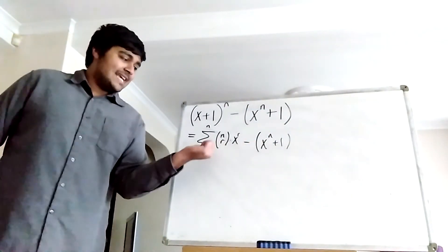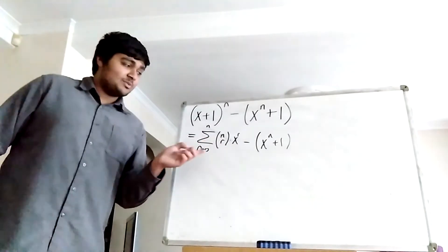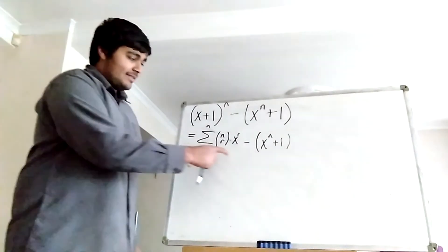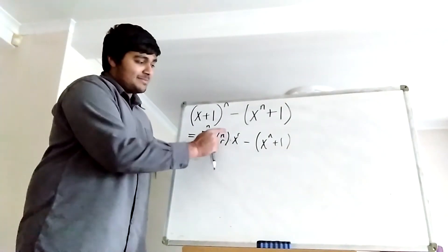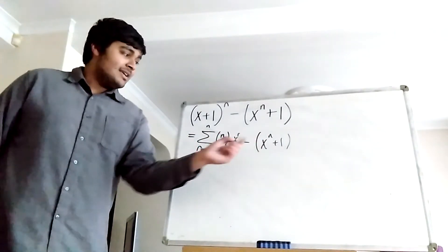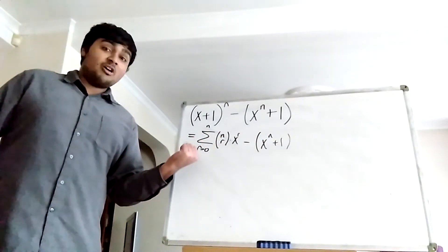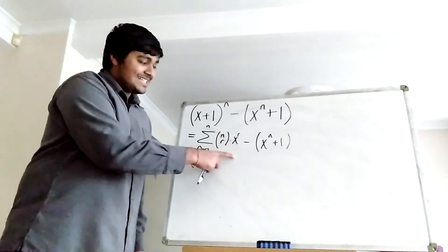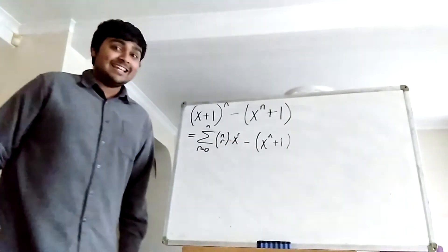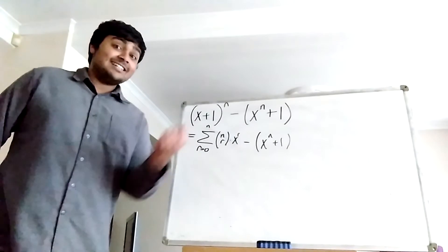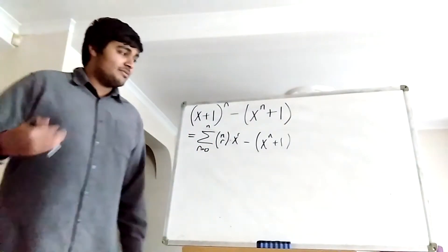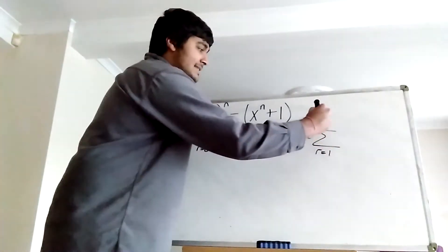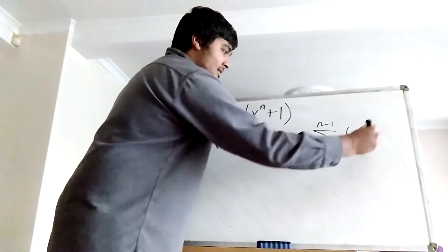This is essentially taking off the first and last term of the sum, because when r equals 0, we get n choose 0 which is 1, times x to the 0 which is 1 — so we get a 1 from the summation that cancels with the minus 1. And when r equals n, we get n choose n which is 1, times x to the n — that cancels with the minus x to the n. So subtracting x to the n and subtracting 1 takes off the first and last terms, leaving us with the sum from r equals 1 to n minus 1 of n choose r times x to the r.